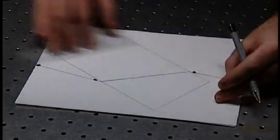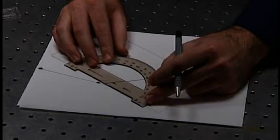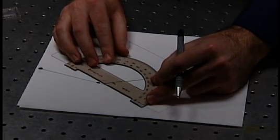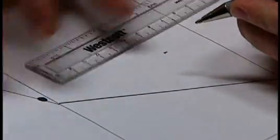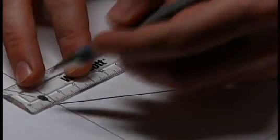Use a protractor to construct a normal at the air acrylic interface and measure and mark incident and refracted angles. Your paper should now look like this.